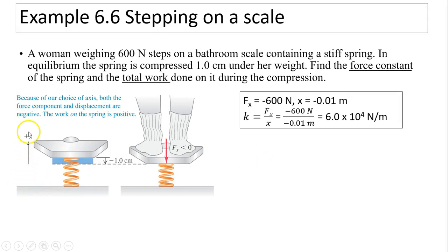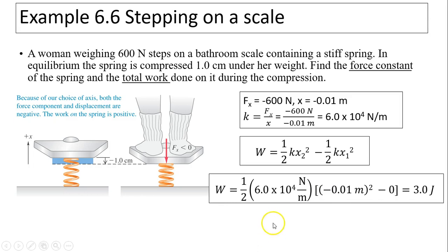If I have up as positive, then my force has to be negative because my force is downward. The displacement has to be negative, so k negative divided by negative gives you a positive number. You should still have the same k. What's the total work? Total work equals one half kx2 squared minus one half kx1 squared. In this case, x1 equals zero, so you will have three joules. The work done equals three joules, so three joules is stored in the spring.